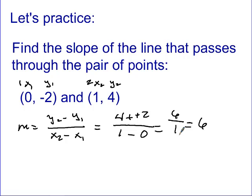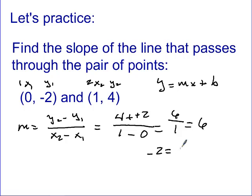Now what if I also asked you to find the entire equation — Y = MX + B? How do we find B? This was the part we had difficulty with in class. We take our slope of 6 and plug it into the M value. Then for X and Y, we choose one of our two points. I'm going to choose the point (0, negative 2) because the 0 makes things easy. I plug the Y value, negative 2, into the Y spot, and 6 into M.